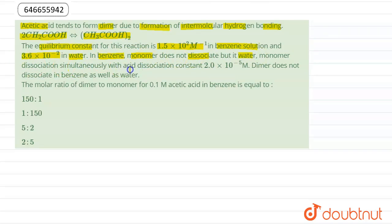With acid dissociation constant for this is 2 × 10⁻⁵ M. Dimer does not dissociate in benzene as well as in water. The molar ratio of dimer to monomer in 0.1 M acetic acid in benzene is equal to: option A 150:1, option B 1:150, option C 5:2, and option D 2:5.